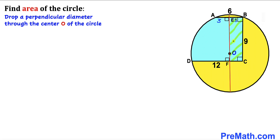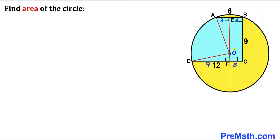Now let's focus on rectangle EBCF. Since side length EB is 3 units, side length FC is also 3 units. The whole segment CD is 12 units and segment FC is 3 units, so segment FD equals 12 minus 3, which gives us 9 units. I have connected center O with points A and D. OD is the radius of this circle, labeled lowercase r, and OA is likewise the radius, also labeled r.